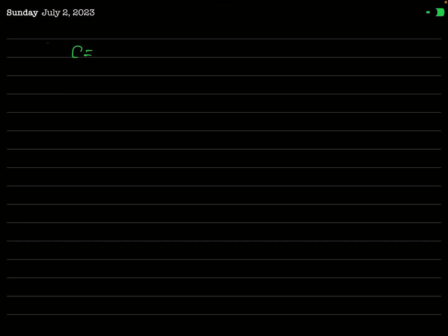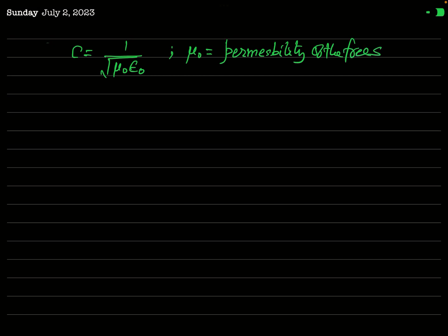From electromagnetic theory, c — the speed of electromagnetic wave or light in free space — is equal to 1 over the square root of μ₀ times ε₀. Here μ₀ is called the permeability of free space.